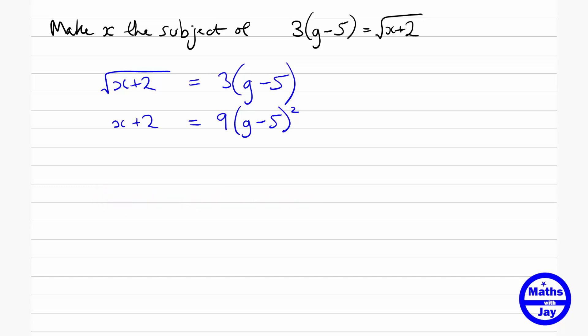Note it's not g squared minus 5 squared, that would be something completely different. And actually we're nearly there now because we want to make x the subject, so all we need to do is subtract 2 from both sides, and we hopefully have our answer.